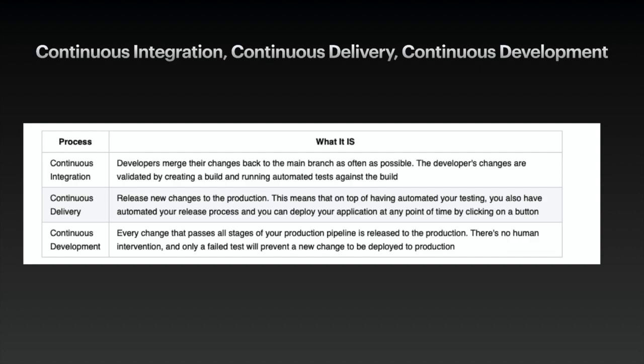Continuous integration: developers merge their changes back to the main branch as often as possible, and the developer changes are validated by creating a build and running automated tasks against the build. Continuous delivery: delivers new changes to production — this means that on top of having automated testing, you also have automated your release process and you can deploy your application at any point in time by clicking a button. Continuous deployment: every change that passes all stages of the production pipeline is deployed to production; there is no human intervention and only failed tasks will prevent new changes from being deployed.